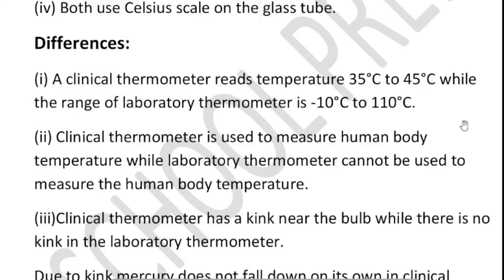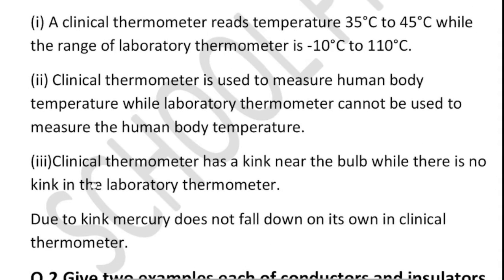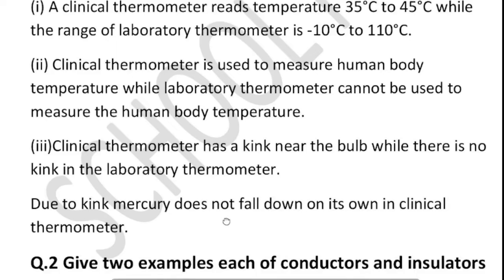The clinical thermometer is used to measure human body temperature, while the laboratory thermometer cannot be used to measure human body temperature. The clinical thermometer has a kink near the bulb, while there is no kink in the laboratory thermometer. Because of this kink, mercury does not fall down on its own in the clinical thermometer.